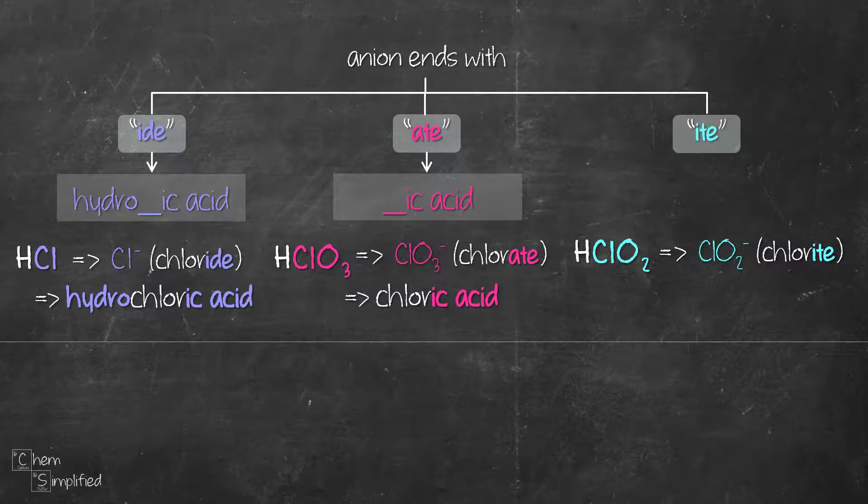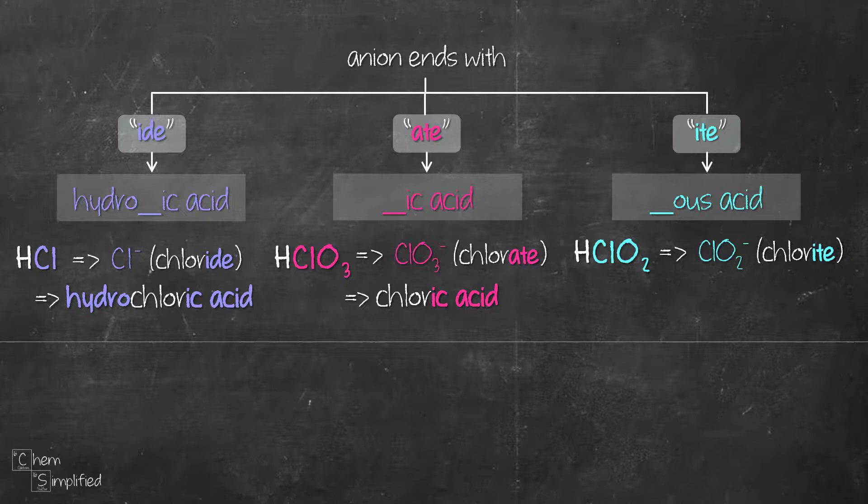Last but not least, anion that ends with ITE, we replace the ITE with the suffix OUS acid. So for our example chlorite, we replace the ITE with OUS acid. So the name for HClO2 is therefore chlorous acid.